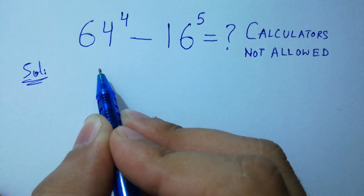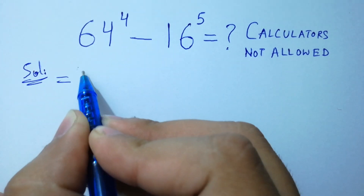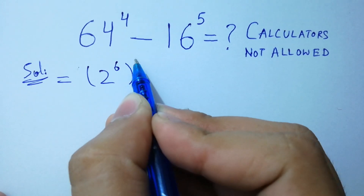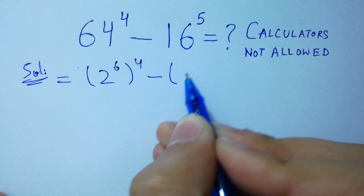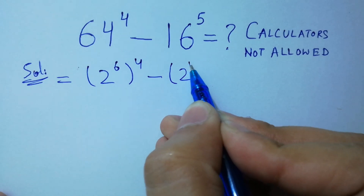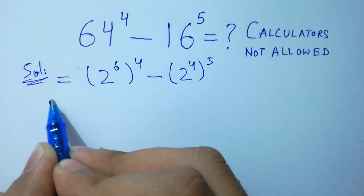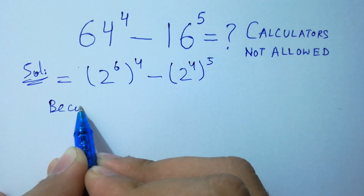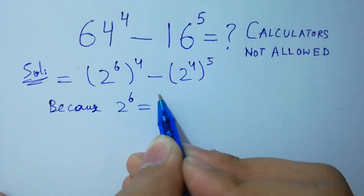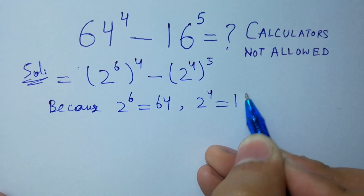64 to the power 4 is the same as 2 to the power 6, to the whole power 4, minus 16 to the power 5, which is the same as 2 to the power 4, to the whole power 5. Because 2 to the power 6 equals 64, and 2 to the power 4 equals 16.